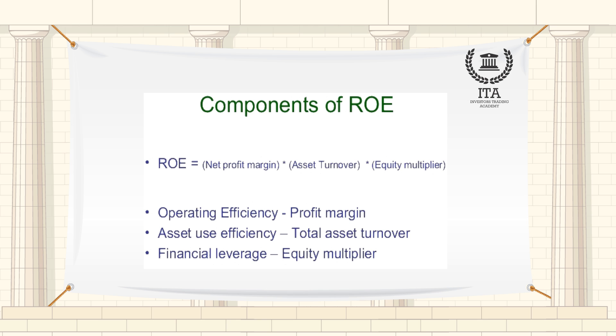The DuPont Analysis looks at three main components of the ROE ratio: profit margin, total asset turnover, and financial leverage.